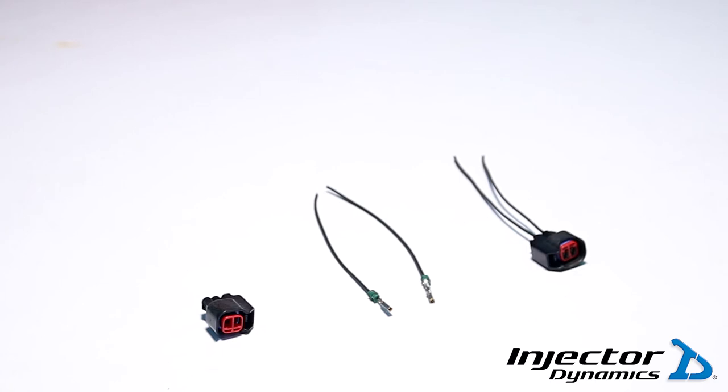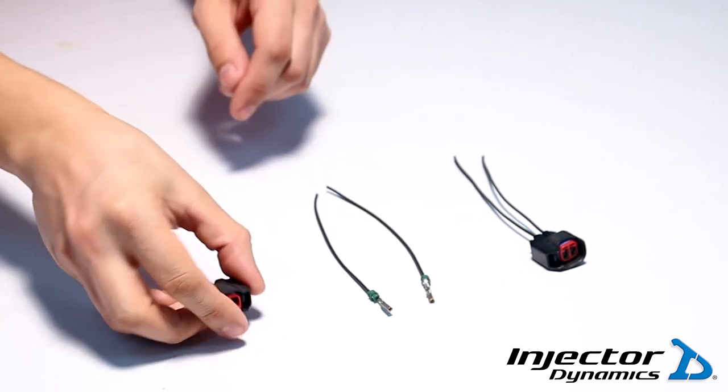The next step on assembly is taking the connector body itself and installing the wire leads with the now crimped terminals into it. You'll take the connector body with the connector body lock on the left-hand side and install the terminals with the locks on the bottom as shown.